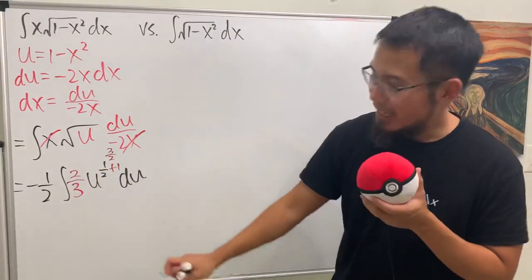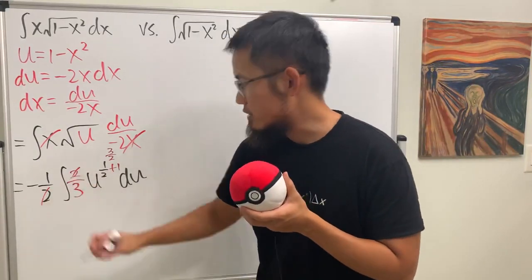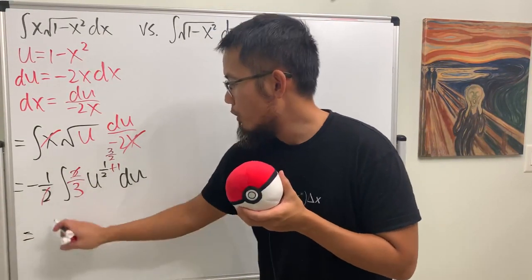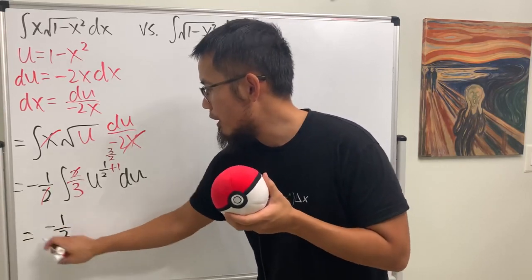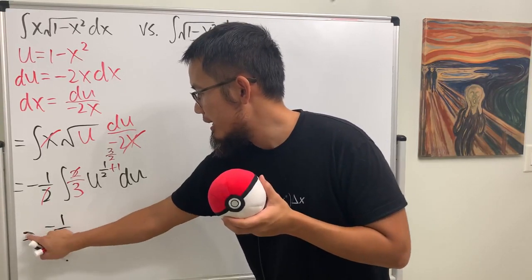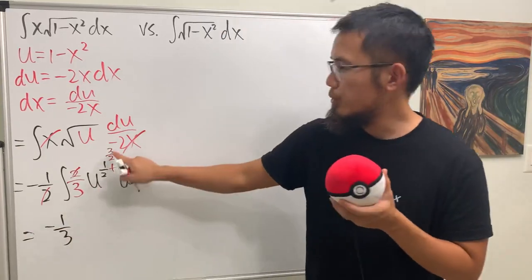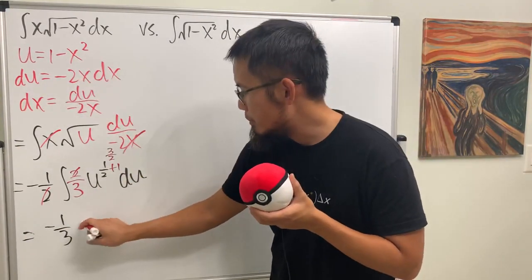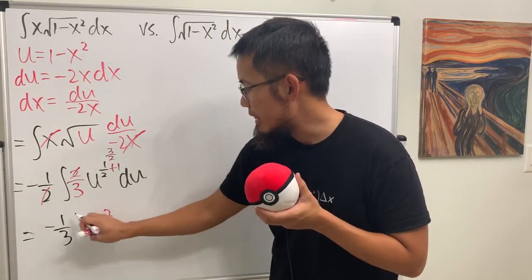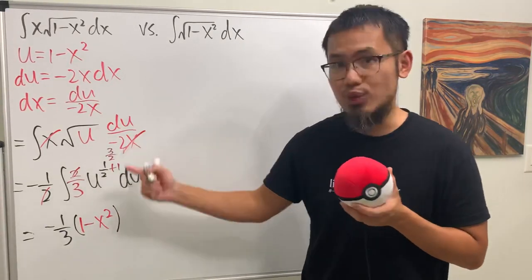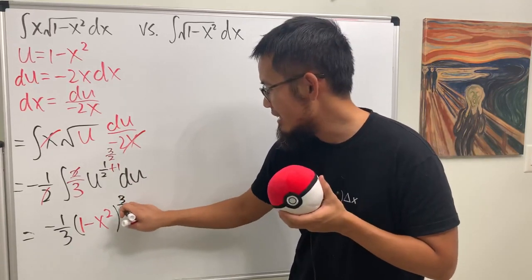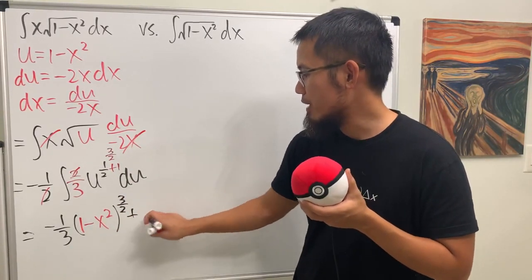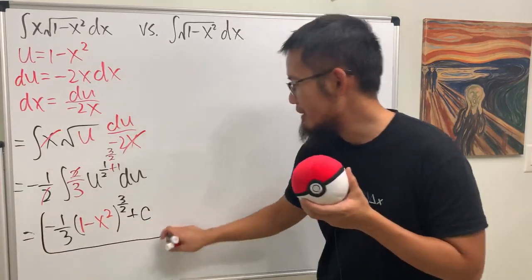Dividing by 3/2 is the same as multiplying by its reciprocal, 2/3. The 2 and 2 cancel — very nice. All in all, we end up with negative 1 over 3, times u to the 3/2 power. We know u equals 1 minus x squared, so we substitute back: negative 1/3 times (1 minus x squared) to the 3/2 power, plus C. That's it for the first integral.